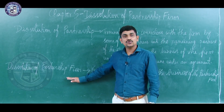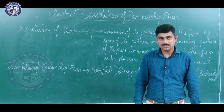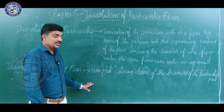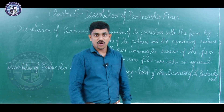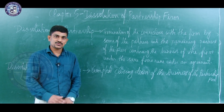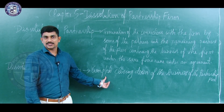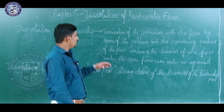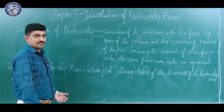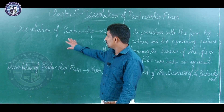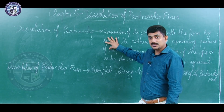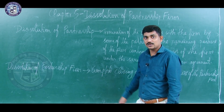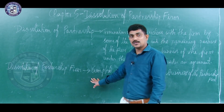Dissolution of partnership firm is the complete closing down of the partnership business. Here, all the partners terminate their connection with the partnership, and the partnership business comes to an end. In simple terms, dissolution of partnership firm means discontinuation of the partnership business. All partners cut off their connection, no partner remains, and so the partnership business comes to an end.